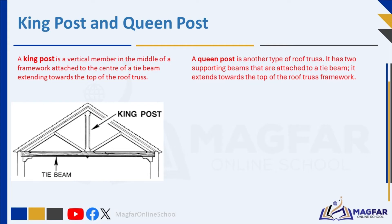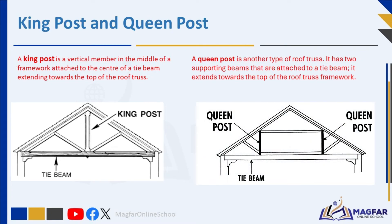A queen post is another type of roof truss member. It has two supporting beams attached to a tie beam, extending towards the top of the roof truss framework. Queen posts enhance the truss's stability and load-bearing capacity. When building a bridge or roof and choosing between queen posts and a king post, queen posts come in pairs on either side, providing better stability — it's like having a friend on each side to help hold things up.